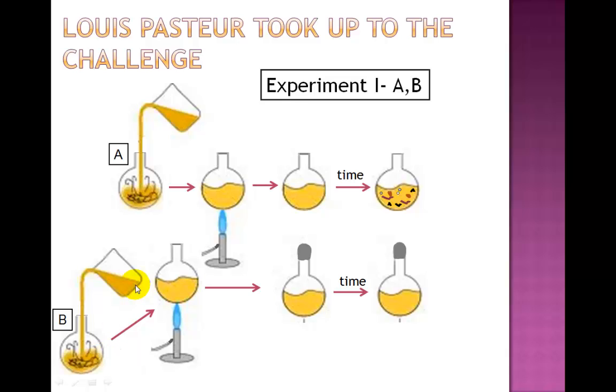Louis Pasteur heat sterilized both flasks containing the broth for long enough time to kill all the microorganisms just as Spallanzani did. He left flask A open to air, whereas flask B he sealed. He allowed time to pass for both flasks.